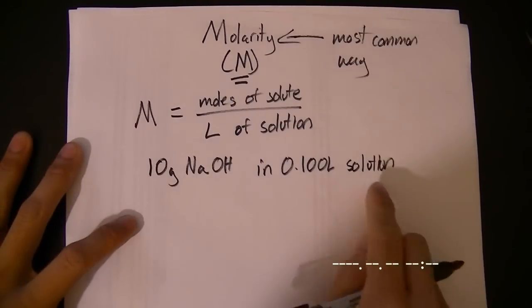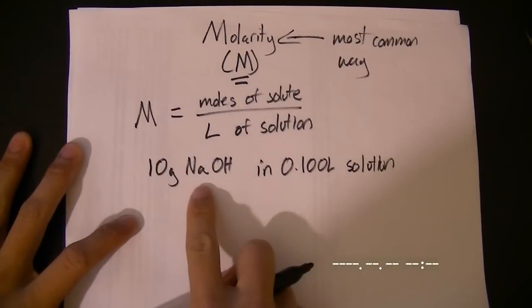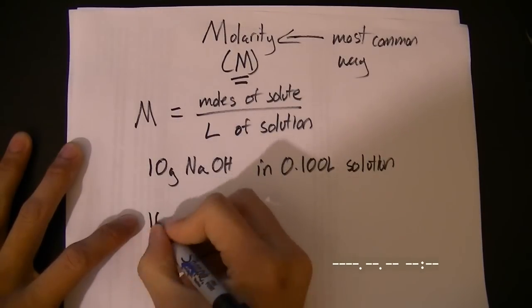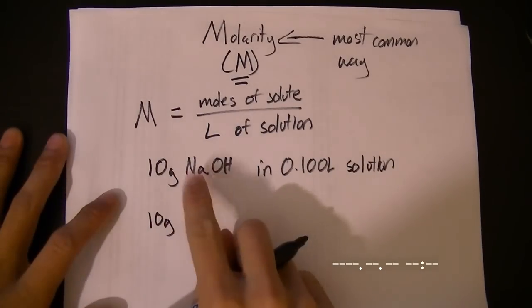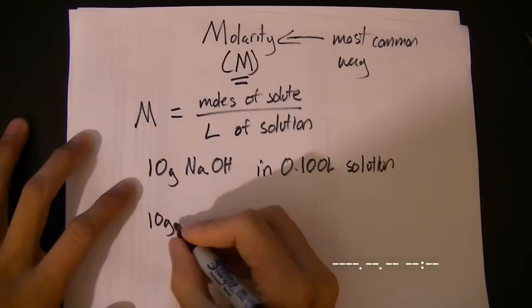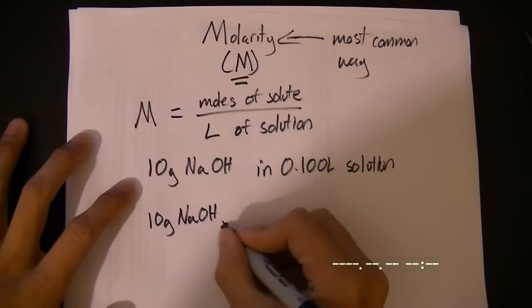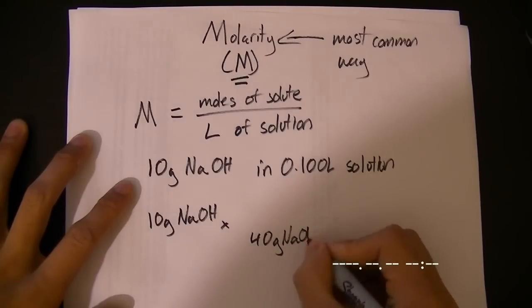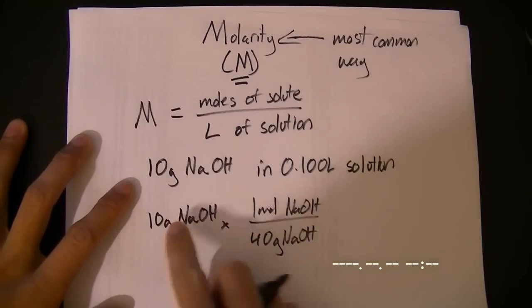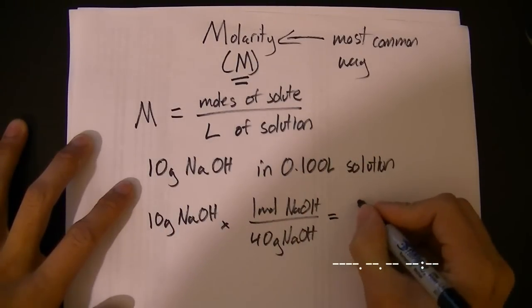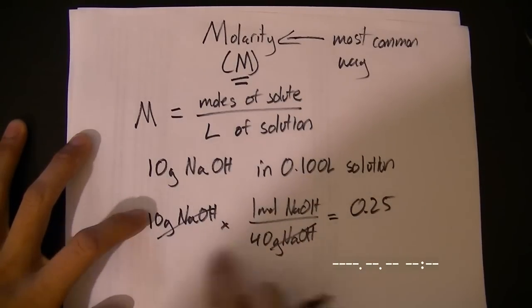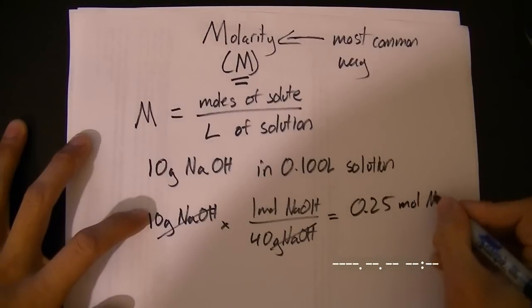Well, this is pretty simple. In order to find the molarity of sodium hydroxide in our solution, we would first need to find the amount of moles of sodium hydroxide because we know that we're dissolving this in the solution, so this would be our solute. 10 grams of NaOH. There are 40 grams of NaOH for every one mole of NaOH. Here I'm using our mole ratio. It turns out to be 0.25. 10 divided by 40 moles of NaOH.